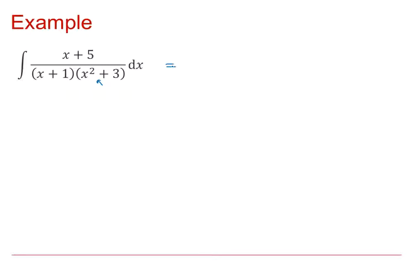And we've previously put this into partial fractions. So we had the linear x plus 1 and the quadratic x squared plus 3. And we discovered that the linear x plus 1 had a constant numerator of 1, and the quadratic x squared plus 3 had a linear numerator of 2 minus x.